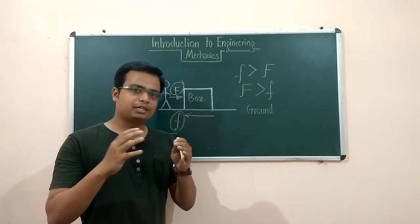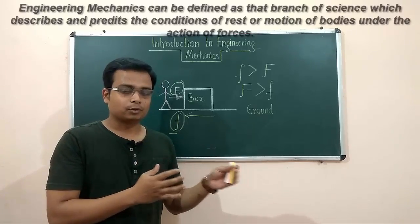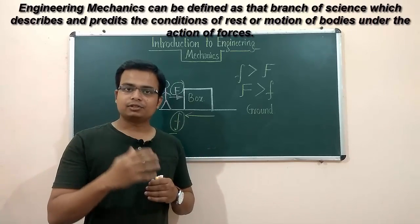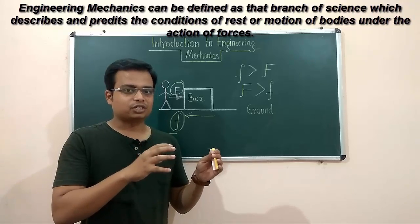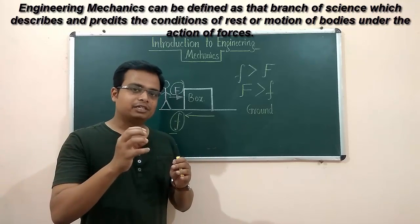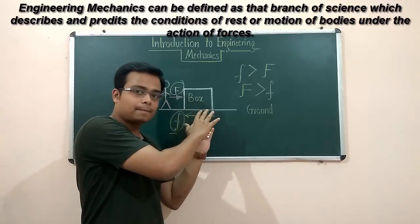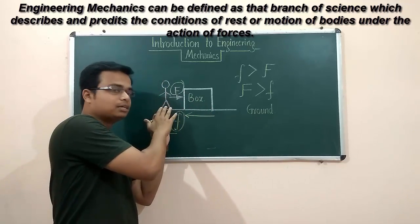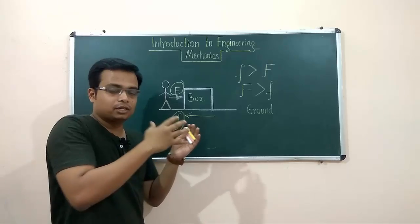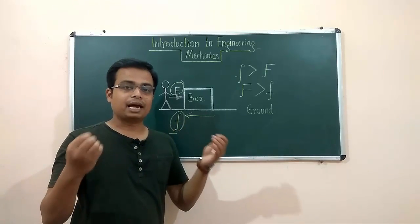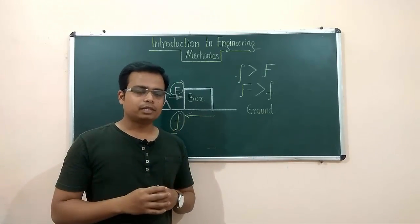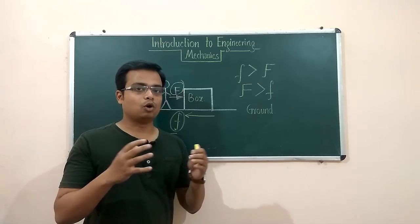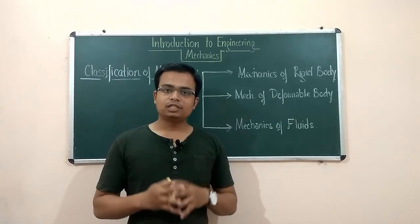Now that we've seen different examples till now, we'll try to frame a better definition of engineering mechanics. Well, it goes like this: mechanics essentially can be defined as that science which describes and predicts the conditions of rest or motion of bodies when a certain amount of load is applied onto it. So that's how we define engineering mechanics, and I'm sure that you guys must have got a very good idea as to what this subject has to offer.